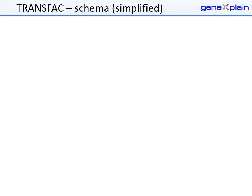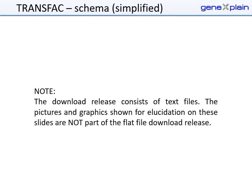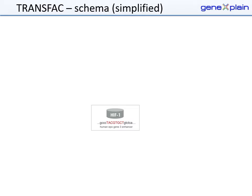I would like to briefly describe the core structure of the TRANSFAC database based on the included data. The download release consists of text files. At the center of TRANSFAC we have transcription factors and the DNA binding sites extracted with experimental evidence from scientific publications. The interlinked factor and site entries are captured in the respective flat files.